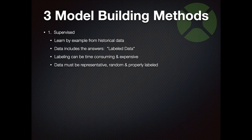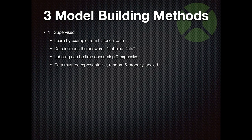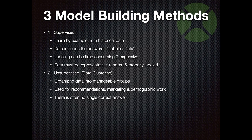There are three methods of building models. The first is called supervised - the most common - and this is learned by example from historical data. You've got a huge database with all the actual answers and it learns from that. This data is called labeled data, and getting the labels right is critical. If you're Twitter trying to find objectionable tweets, somebody has to go through and label each one - that can be very time-consuming and expensive. Garbage in, garbage out. If your existing loan database is full of discriminatory practices, your model will be too.